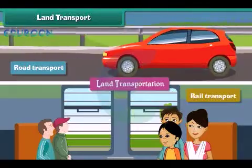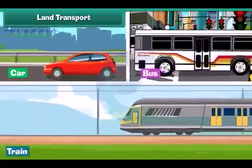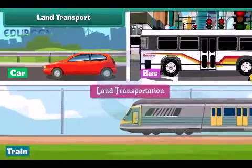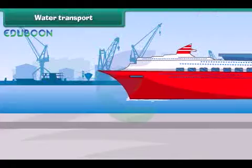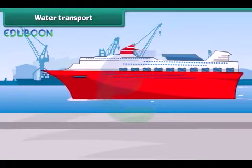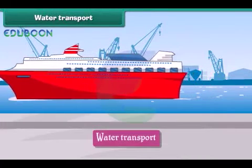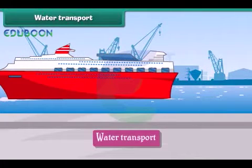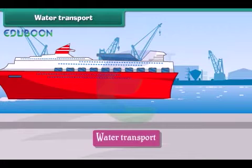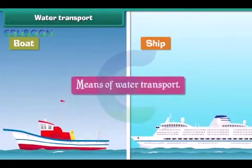Vehicles such as cars, buses and trains are called means of land transport. Water transport is the movement of goods and passengers on water. The vehicles that carry goods and passengers through waterways are called means of water transport. Boats and ships are the means of water transport.